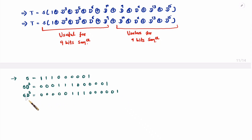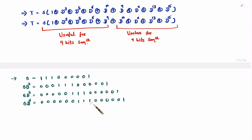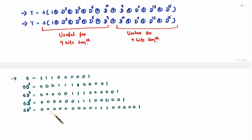S·d⁶ means 6 zeros of padding followed by the sequence: triple 1, 5 times 0, and 1. S·d⁹ means 9 zeros padding then triple 1, 5 times 0, and 1. Since our transmitted sequence only needs 9 bits, after position 9 everything is useless data.